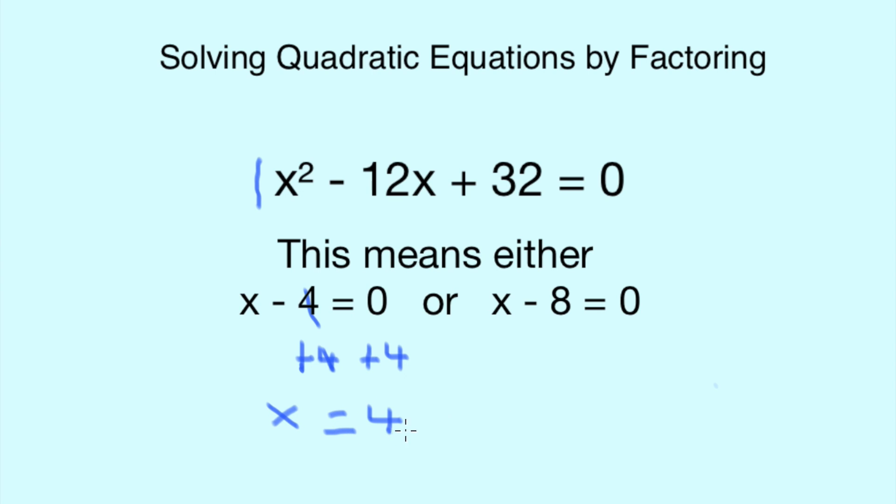Or we do the same thing on this side. We put a +8 below the -8 and a +8 below the 0. With the 8s canceling each other out, x = 8.